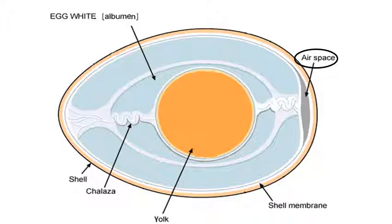The air space in the large end of the egg is formed after the egg has been laid. The body temperature of a chicken is 107 degrees Fahrenheit, and when the egg is laid it immediately starts to cool. As the egg cools, the contents contract and the inner and outer shell membranes separate at the large end of the egg. The fresher an egg is, the smaller the air space is. As an egg gets older, the air space increases.